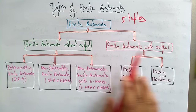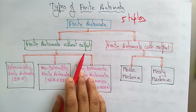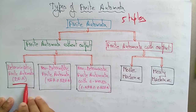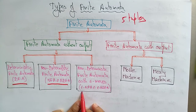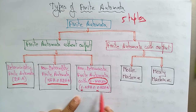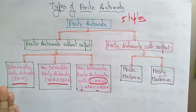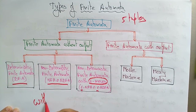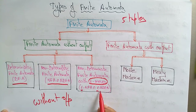Finite automata without output can be: Deterministic Finite Automata (DFA), Non-Deterministic Finite Automata (NFA), or Non-Deterministic Finite Automata with epsilon moves (ε-NFA). Epsilon moves means we also consider epsilon transitions. Remember that these three — DFA, NFA, and ε-NFA — are all finite automata without output.